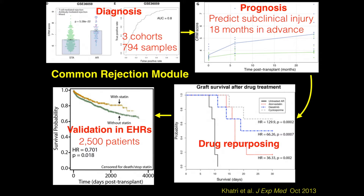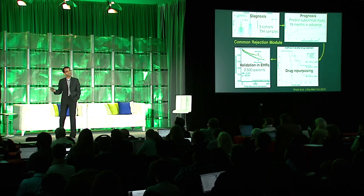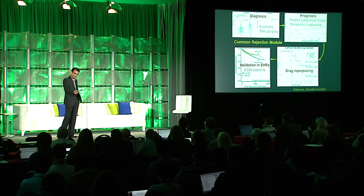Mouse results are good, but how do we take this into humans? We took electronic medical records from Belgium of kidney transplant patients followed for up to eight years and showed that if those patients received one of our predicted drugs — statin — their graft failure rate was 30% lower than those who did not receive statin over eight years. Just using public data, except for the mouse experiment, we found a signature that was common across multiple datasets: diagnostic, prognostic, therapeutic, and by extension, mechanistic.